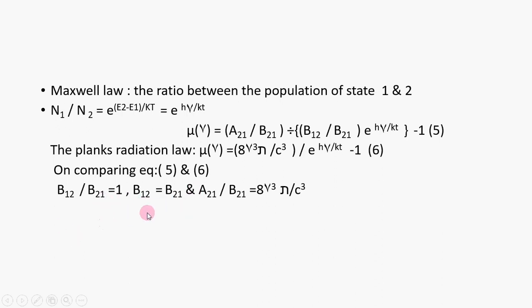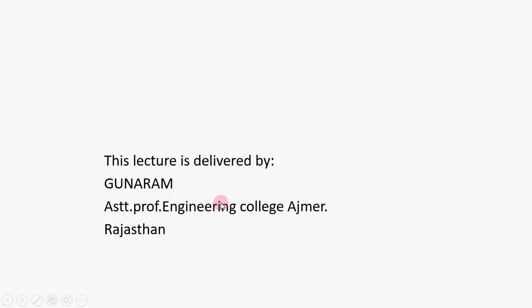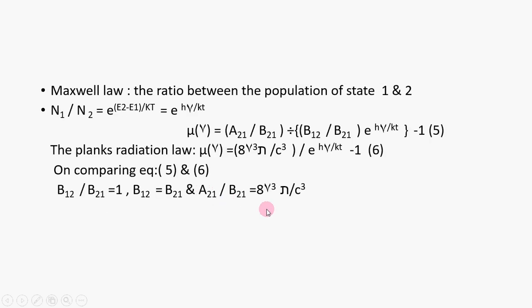The probability of stimulated emission equal to probability of induced absorption. And now the ratio of spontaneous emission to stimulated emission is directly proportional to the cube of frequency. 8, π, and c are constants. Now this is the Einstein constant. We will meet in the next lecture.